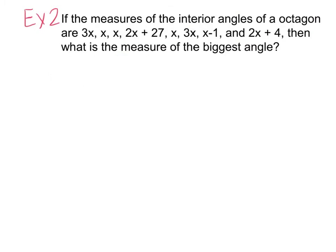For example 2, let's see what they've given us. If the measures of the interior angles of an octagon are 3x, x, x, 2x plus 27, x, 3x, x minus 1, and 2x plus 4, then what's the measure of the biggest angle? Let's highlight what's important. First of all, for this problem, they're asking us for interior angles. And those are the angles on the inside of an octagon. An octagon has 8 sides, so 8 interior angles. Let's see if that's true.